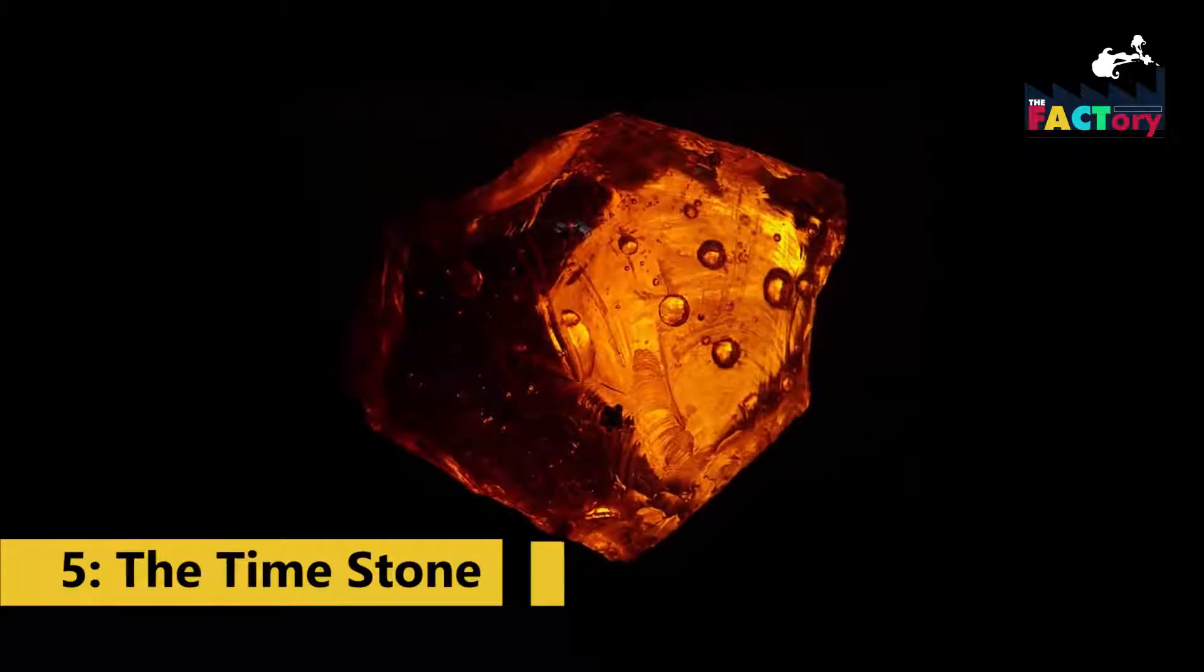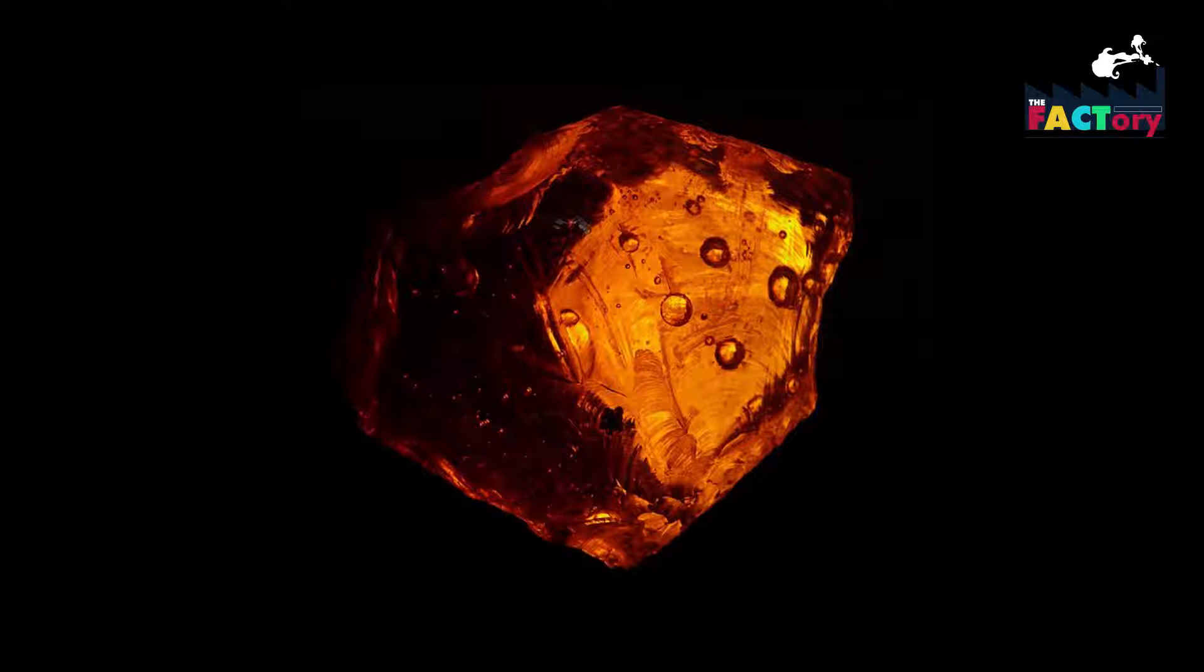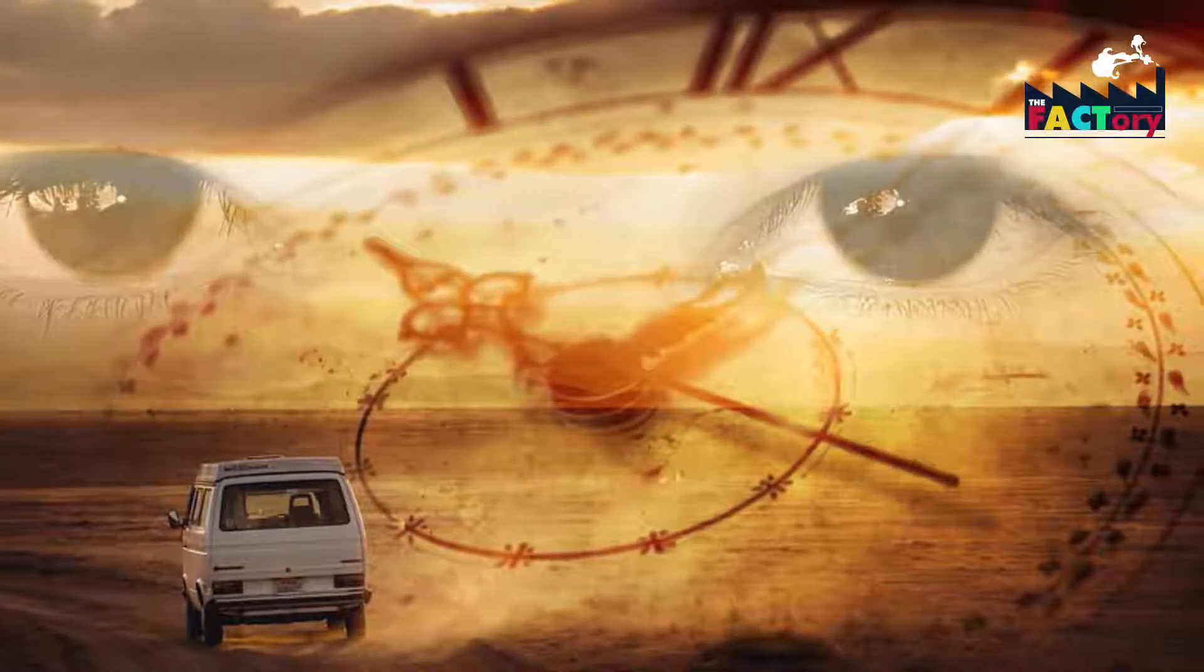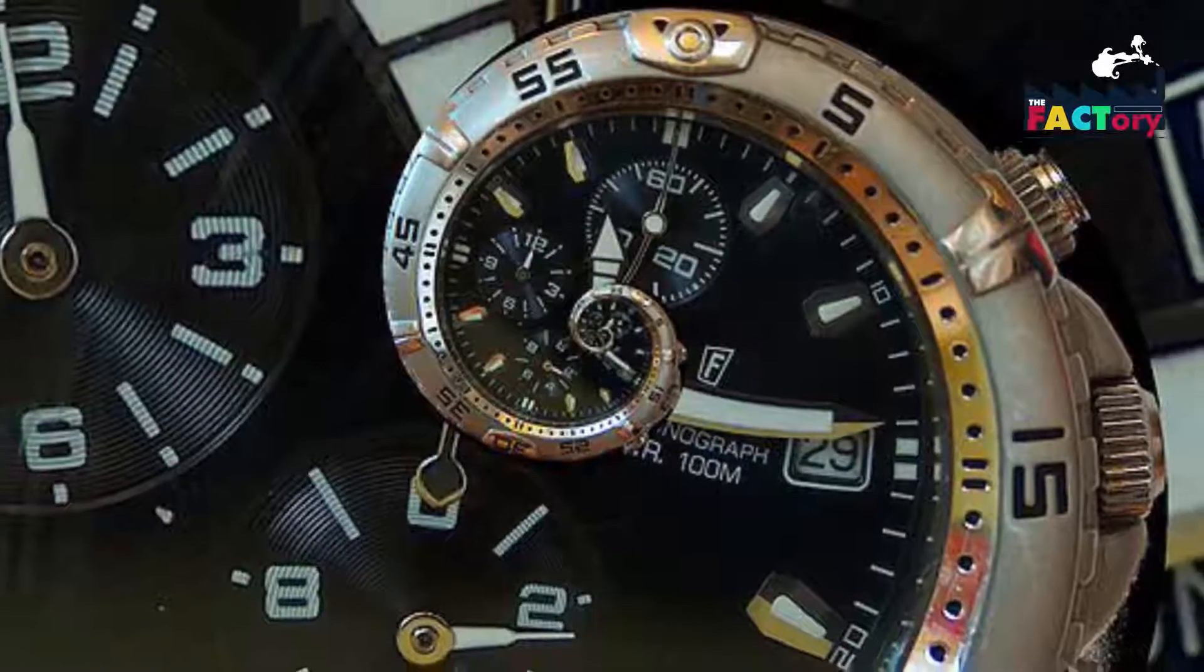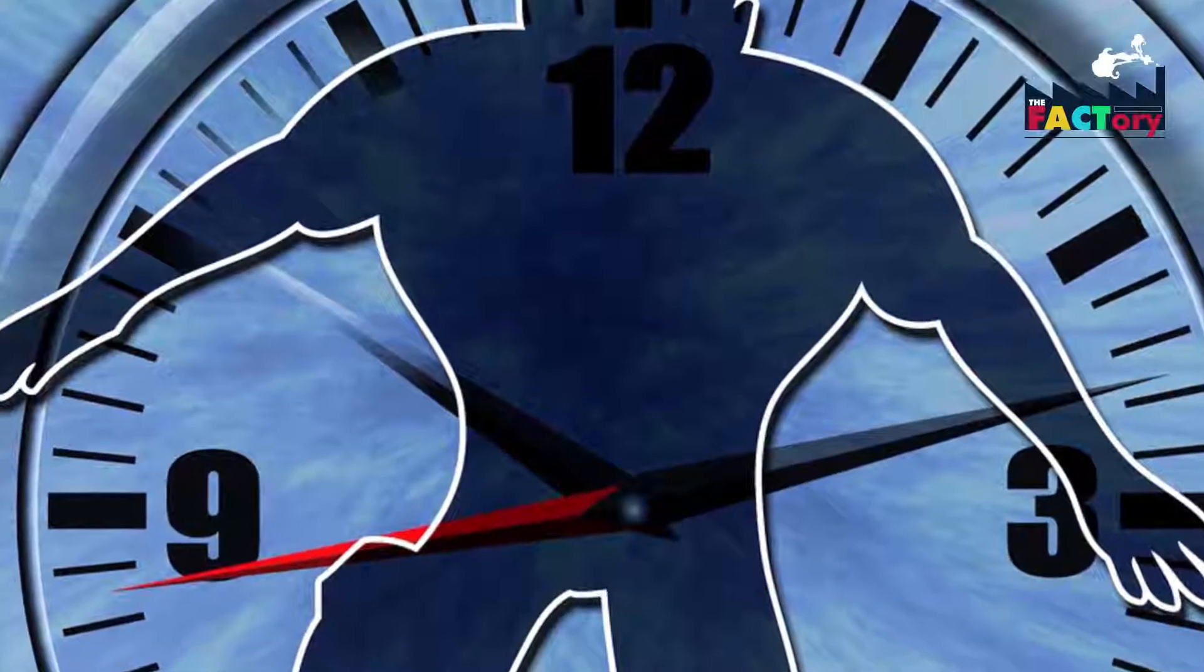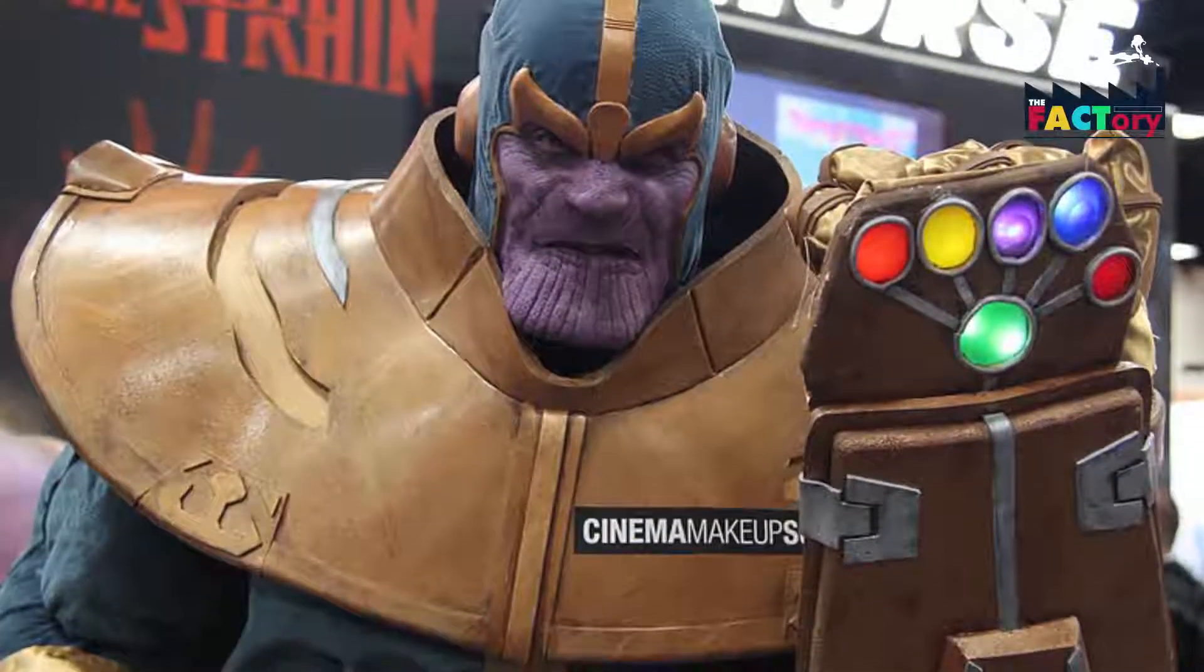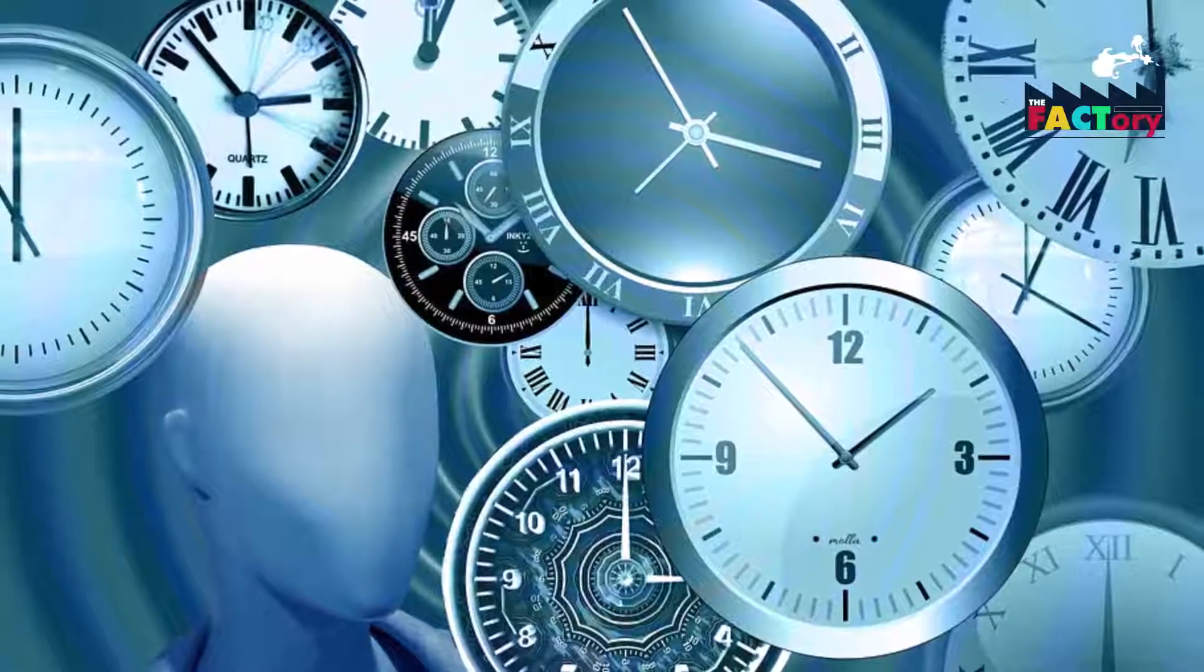Number five: the Time Stone. The time gem allows the user total control over the past, present, and future. Its most basic ability grants its user visions of possible futures. It allows time travel, control over the age of beings, and can also be used as a weapon by trapping enemies or entire worlds in unending loops of time. At its peak, when used with the other gems, it allows its user to exist at all points in time simultaneously.